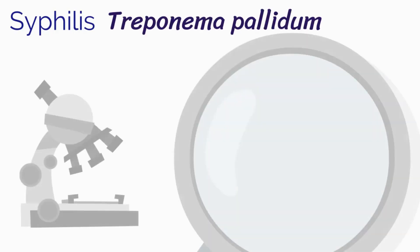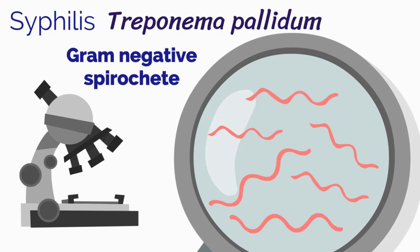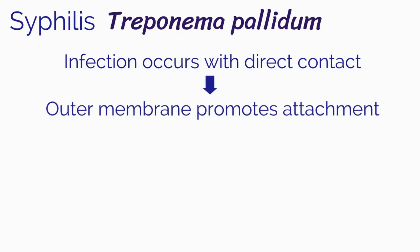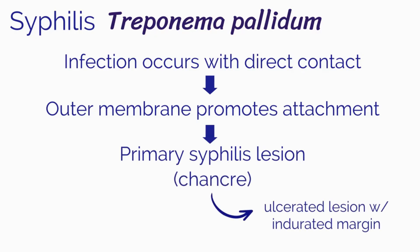You recommend that she also get testing for syphilis. The number of cases of syphilis has increased every year since 2001. Syphilis is caused by Treponema pallidum, a gram-negative spirochete. Infection occurs with direct contact with infectious lesions during sex. The outer membrane of the bacteria promotes attachment to mucous membranes, leading to a primary syphilis lesion at that site, which manifests as a painless chancre — an ulcerated lesion with an indurated margin.